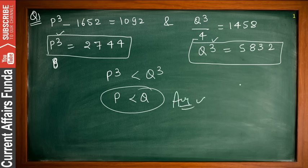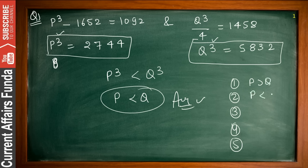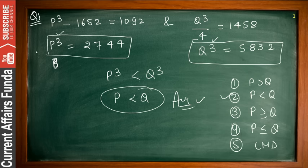From the options — p < q, p > q, p ≥ q, p ≤ q, or CND — the correct answer is p < q, which corresponds to option 2. You should select this option from the given choices. I hope you understand this example.